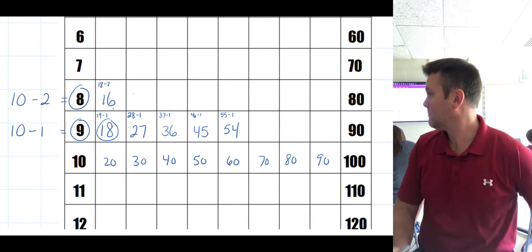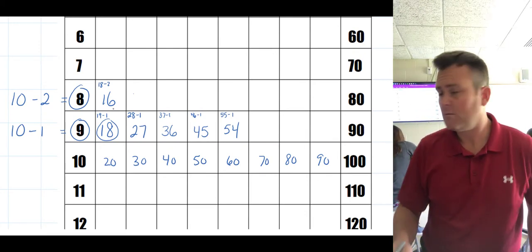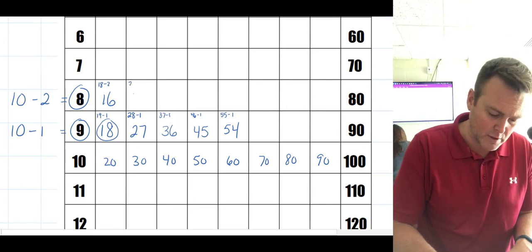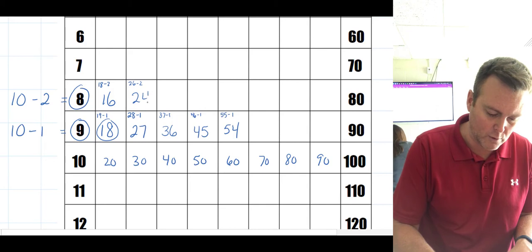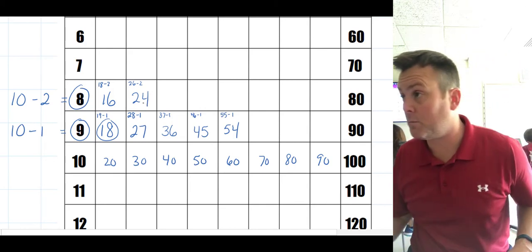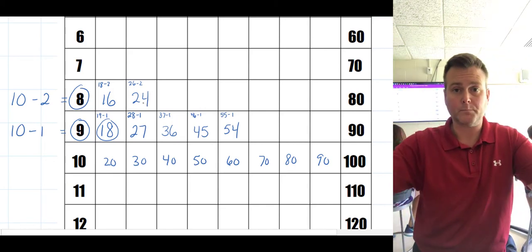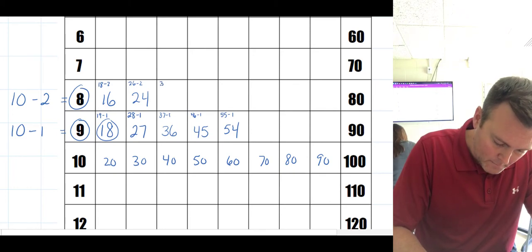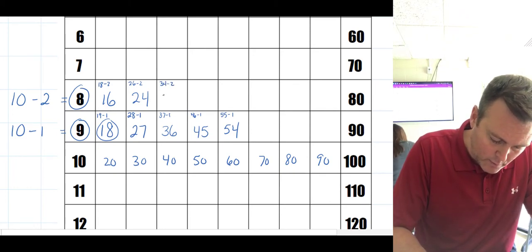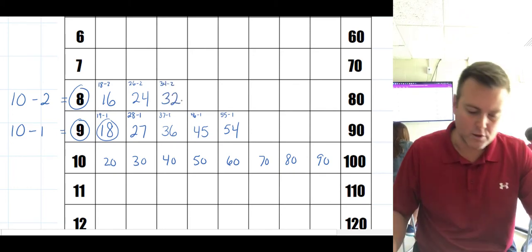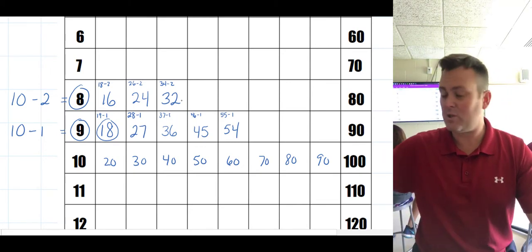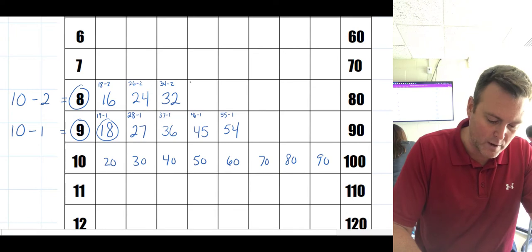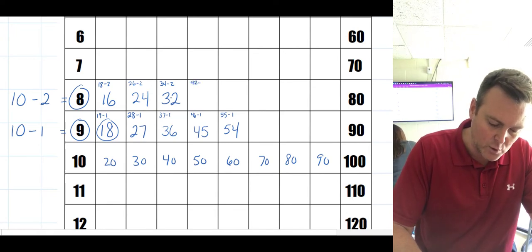I can give you guys any number and you can add 10 to it pretty much within a second, correct? If I see the number 16, 10 more is 26, and then just subtract 2 so we get 24. If I say the number 24, 10 more is 34, subtract 2 and we're going to have 32.